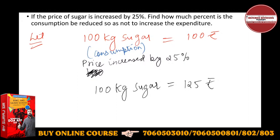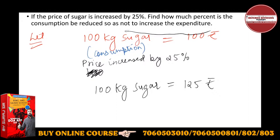Now, you don't have to increase the expenditure. Earlier we were buying 100 kg for 100 rupees. Now also you have to spend only 100 rupees — you don't have to increase the expenditure.